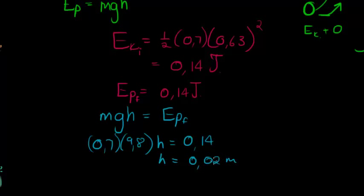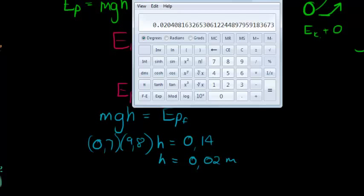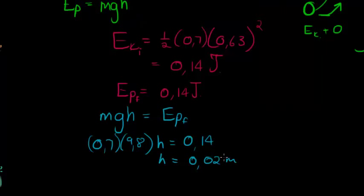Since we were working with millimeters earlier, we can convert: 0.02 meters multiplied by 1000 gives 20 millimeters. That is the height the pendulum reaches after the collision.